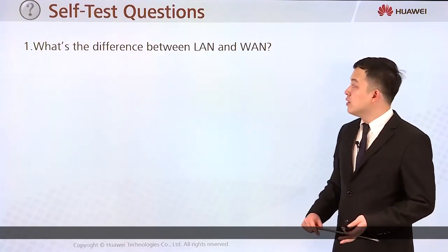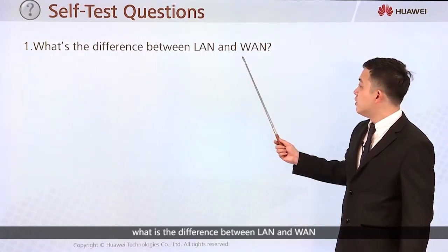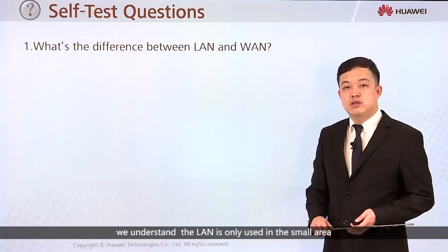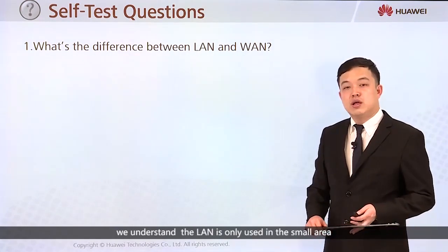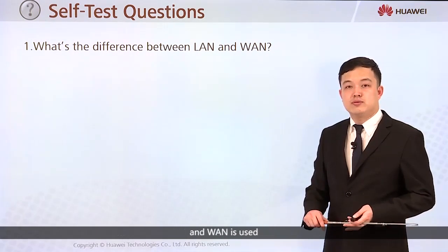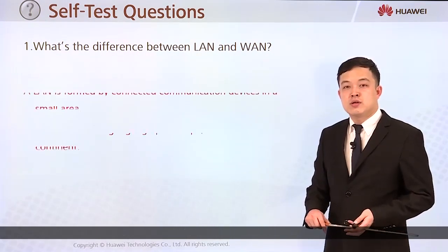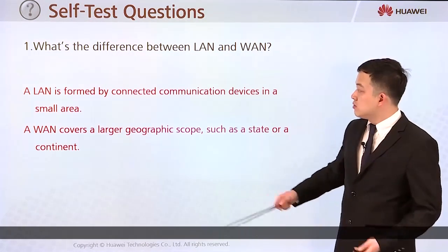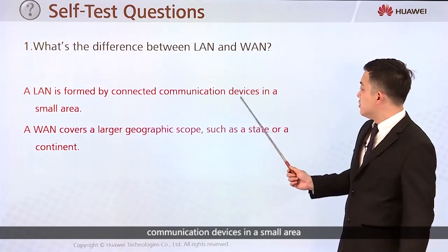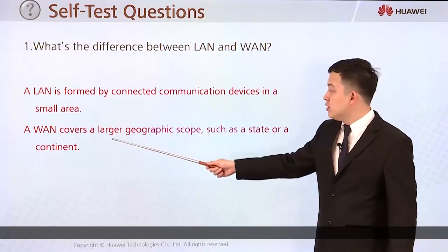Here is one question: what is the difference between a LAN and a WAN? From our learning, a LAN is only used in a small area, while a WAN is used across public networks. The difference is that a LAN is formed by connected communication devices in a small area.